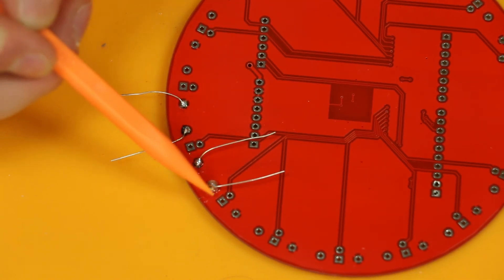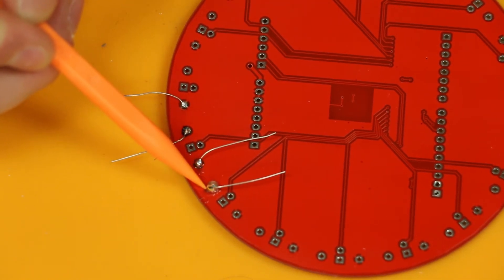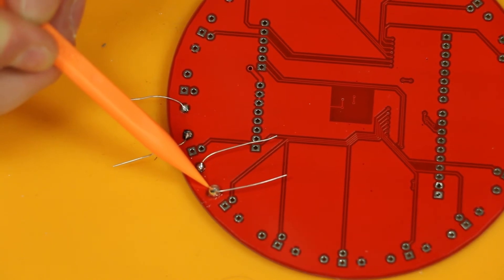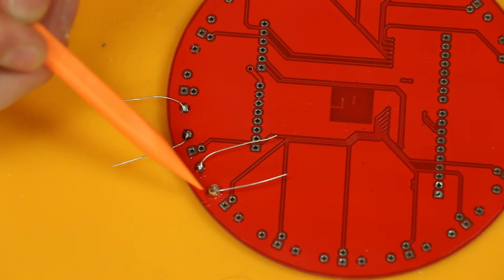And then on this one specifically, it kind of rounds back into itself towards the pad at the bottom. Meaning that this could be a cold solder joint, which happens when you don't heat up the area first.